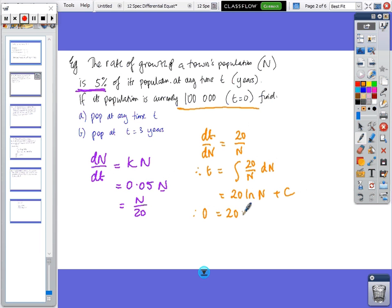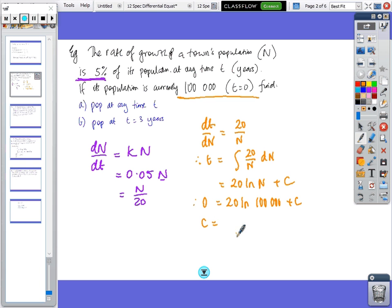So we end up with 20 ln n plus a constant. We find the constant from this information, so 0 equals 20 ln 100,000 plus c, so c will equal minus 20 ln 100,000. And that's your value of c.